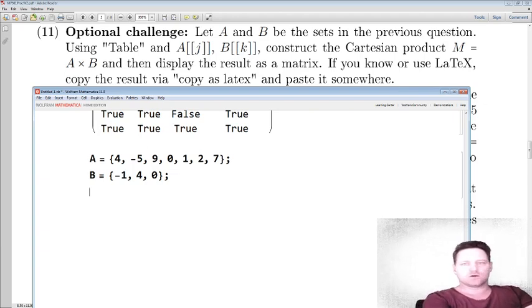So now a Cartesian product is a set of pairs. Okay so M equals, now what I do is I take one element from A, one element from B, and I construct a pair. So if I did that with the first two elements of A and B, well I'd take 4, minus 1, and that would be my first pair.